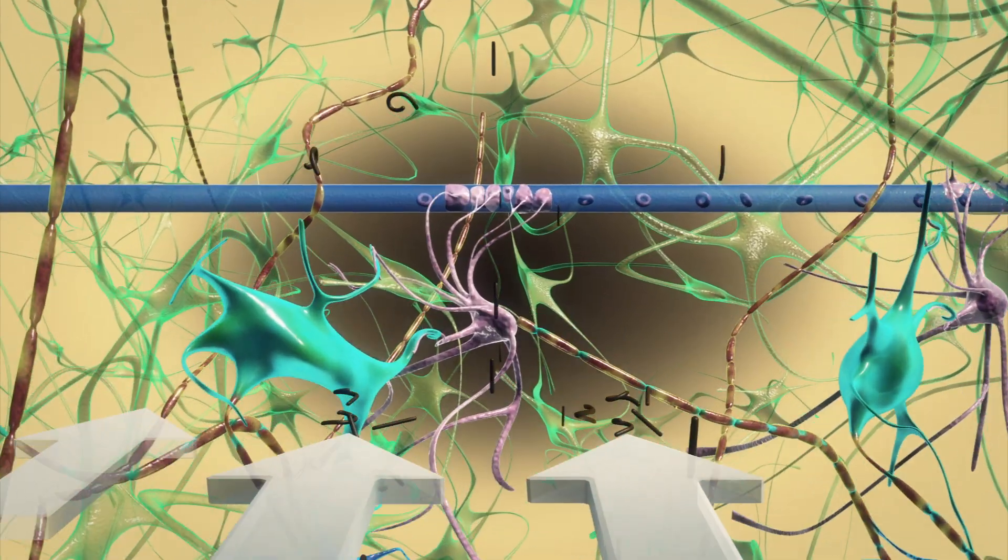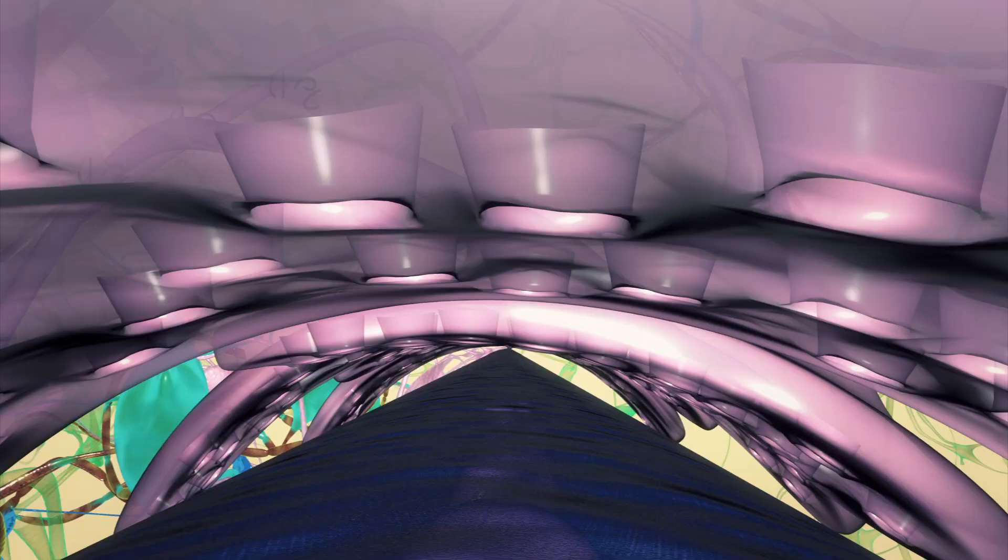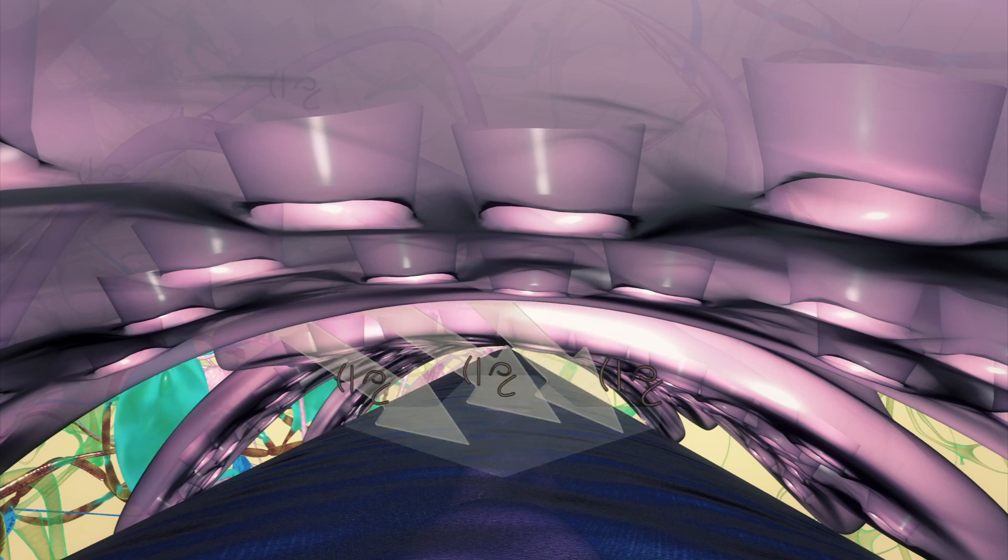During sleep, cerebrospinal fluid enters the brain rapidly to mix with interstitial fluid, washing brain waste from arteries and veins.